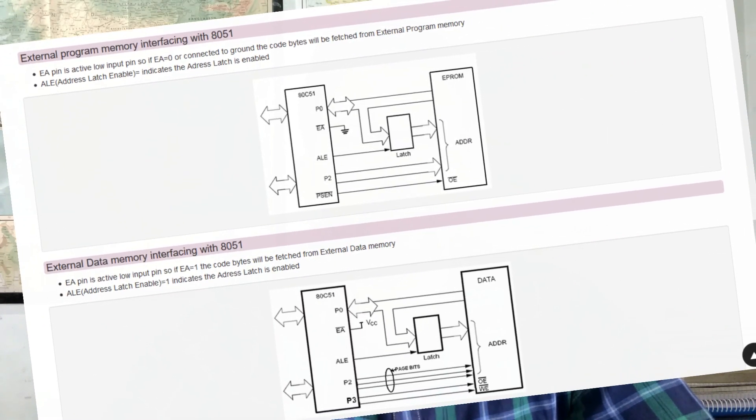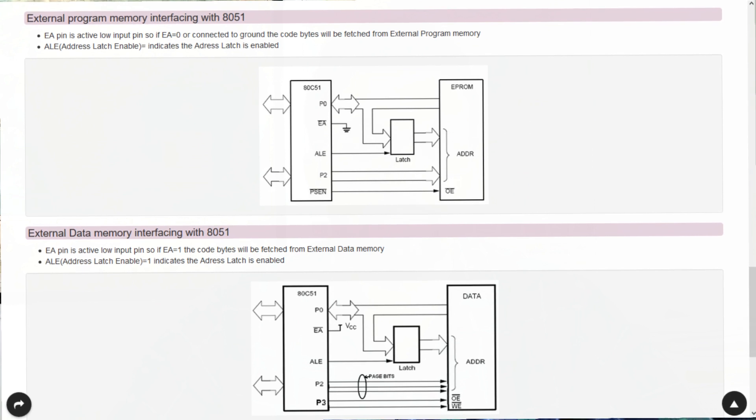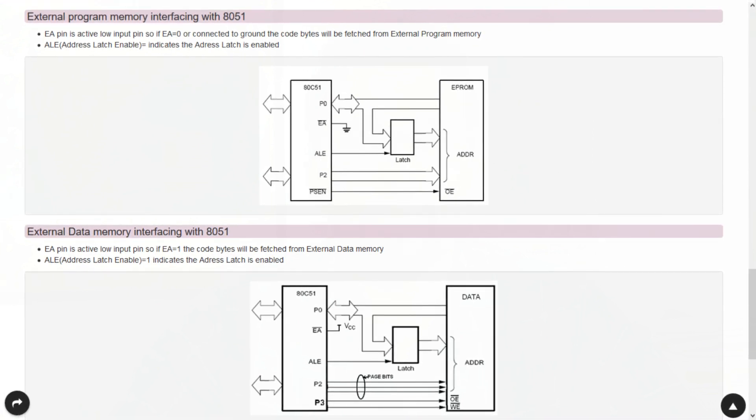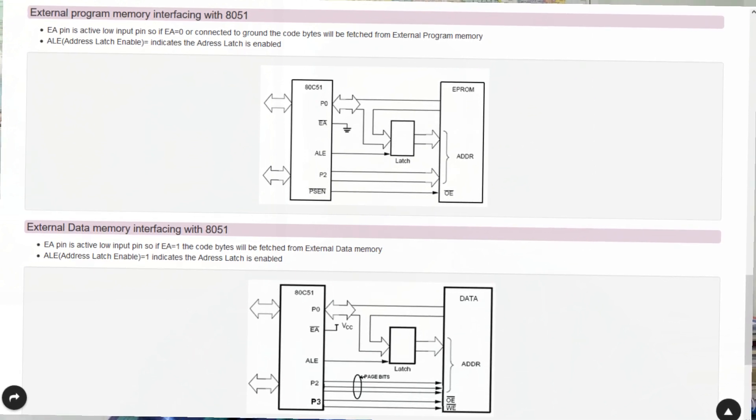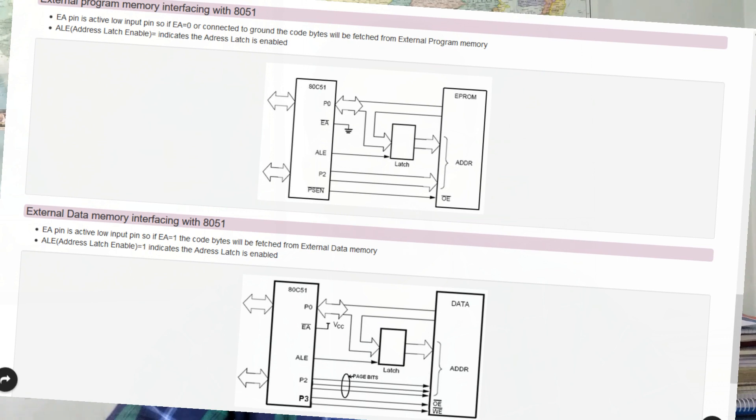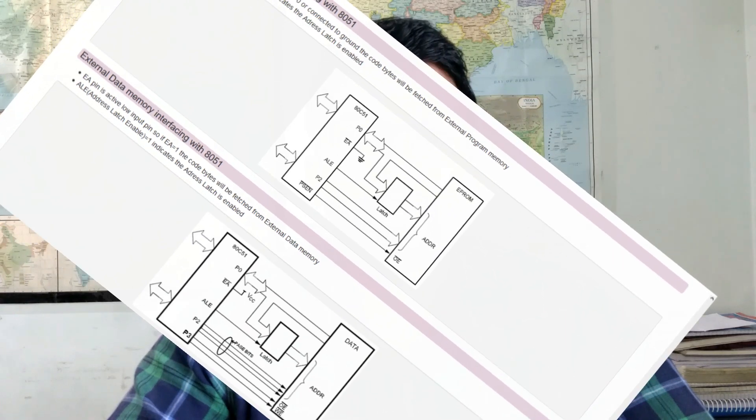It has on-chip 4 kilobytes of PROM (programmable memory) and on-chip 128 bytes of RAM. There are six interrupt sources, two timers and two counters. It has four ports: P0, P1, P2, and P3. It is a 40-pin IC with dual in package, has 32 input-output lines, and the operating frequency is between 10 megahertz to up till 40 megahertz.